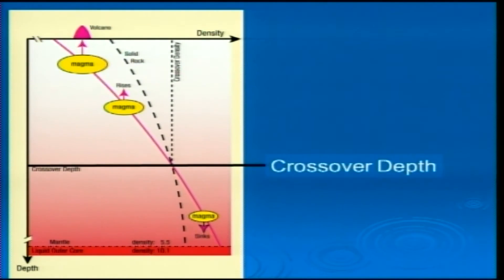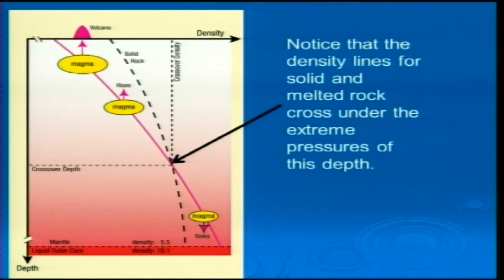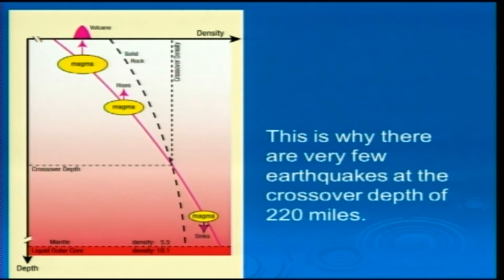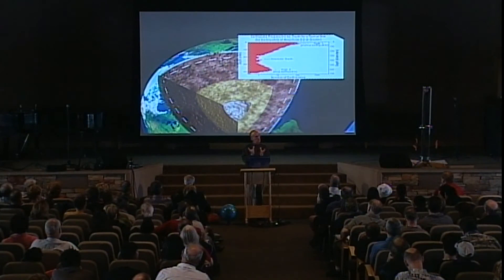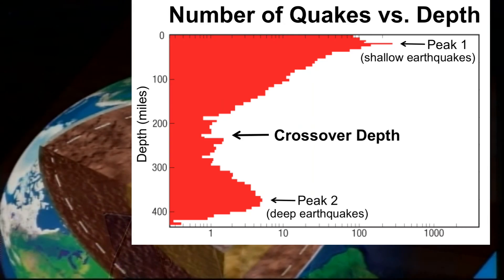Again, as an emphasis: crossover depth. Notice that the two lines cross. When rock melts at the crossover depth, it doesn't change in volume at all — it doesn't produce any stress, it doesn't want to go up or down. That's why there are very few earthquakes at 220 miles. This is actual hard data on the number of earthquakes with depth in the Earth. Notice there are a lot of earthquakes up high, because as that magma gets toward the surface, it wants to grow more and more. As it gets closer to the crossover depth, the buoyant force isn't there to split rock and cause fracturing, so there are far fewer earthquakes at the 220-mile crossover depth.